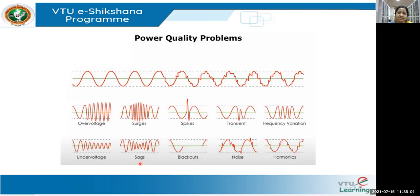A sag — or dip — in the voltage means your waveform is not able to maintain that one per unit nominal value. Between 10% and 90% dip in voltage, as per the IEEE 1159 standard, is defined as a voltage sag. A blackout, or interruption, means the system has come to a halt — a serious issue in power quality.